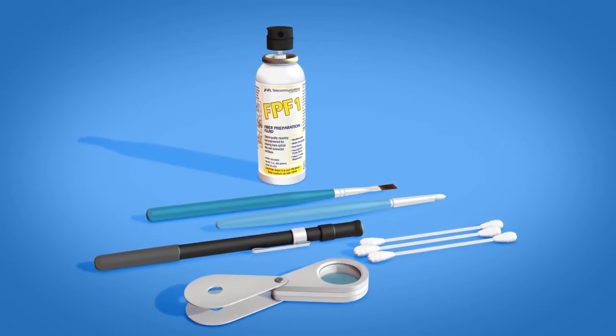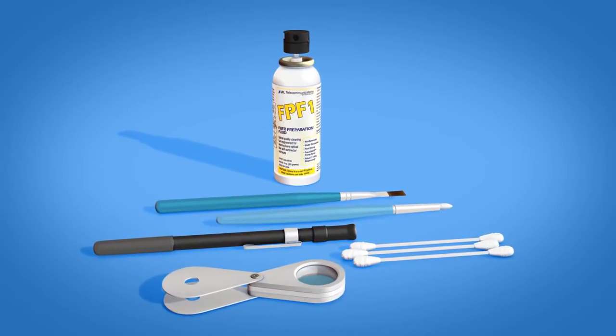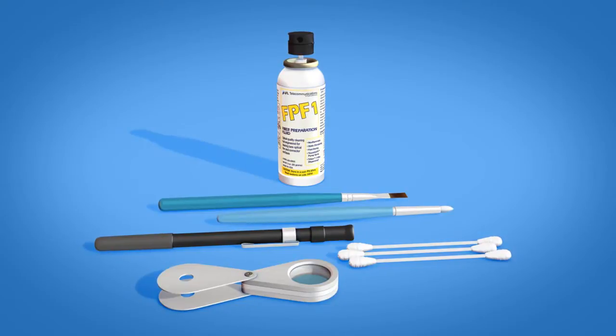Many of the V-groove cleaning kit's components are intuitive, so you will not need extensive training to learn how to use them. Let's start with the LED pen light, eye loop, fiber preparation fluid, CS1 cotton swabs, scrubber brush, and sweeper brush.